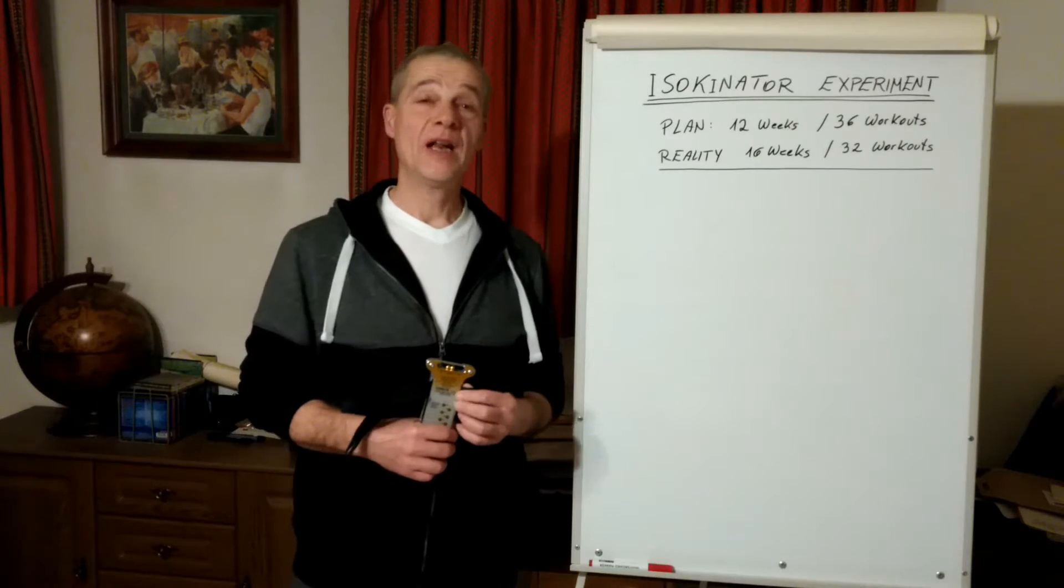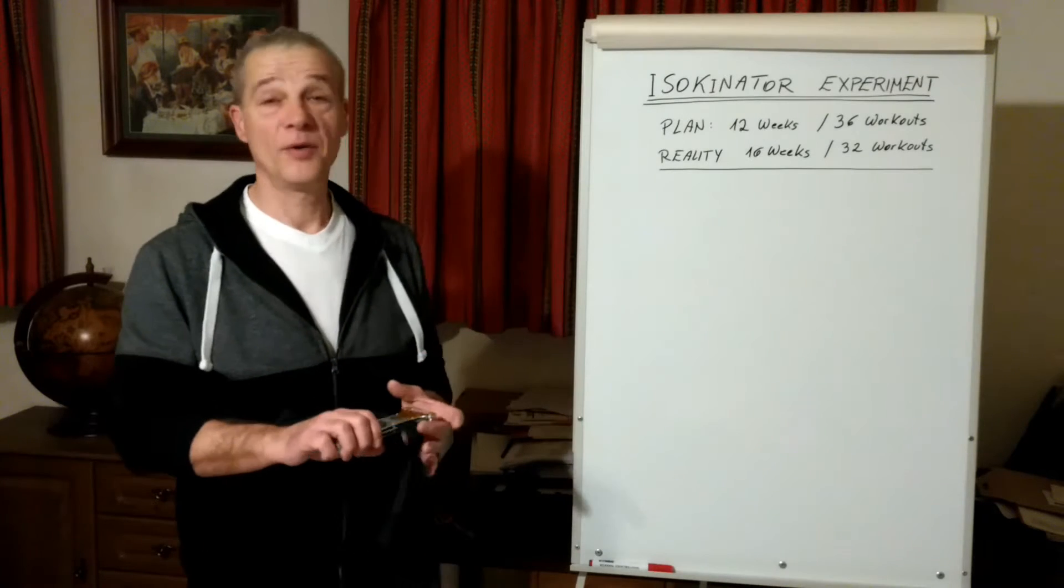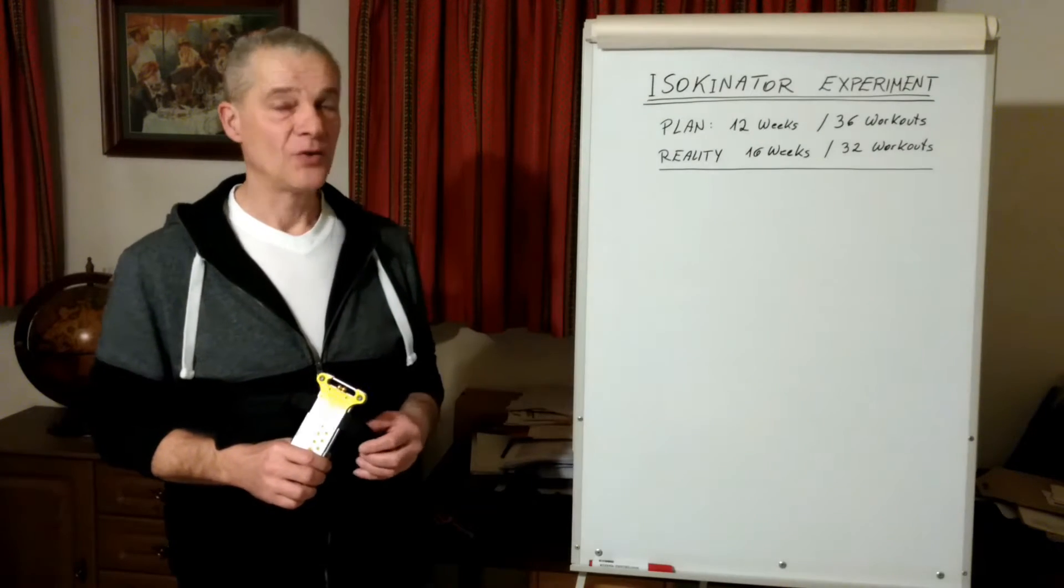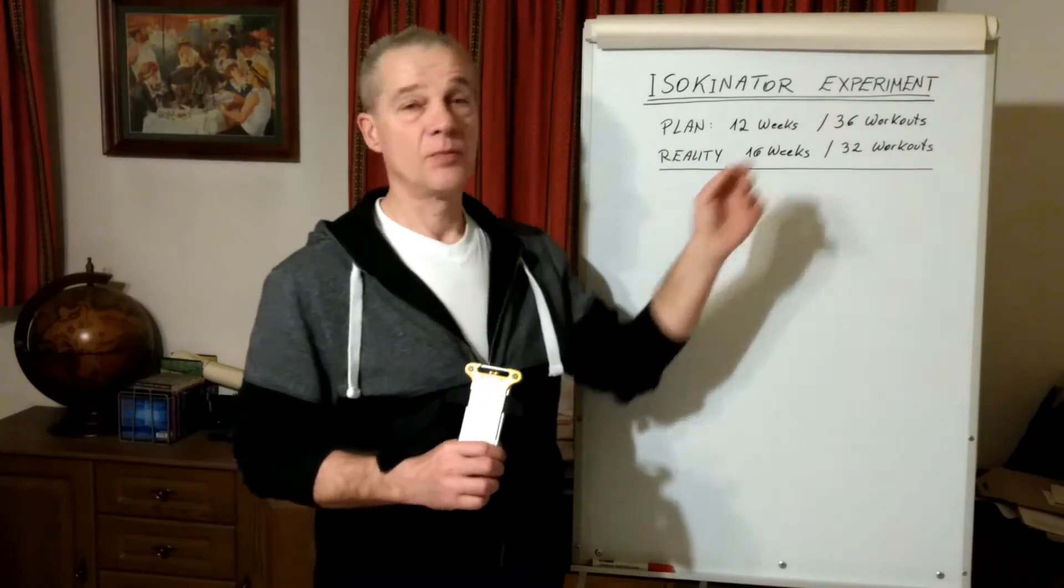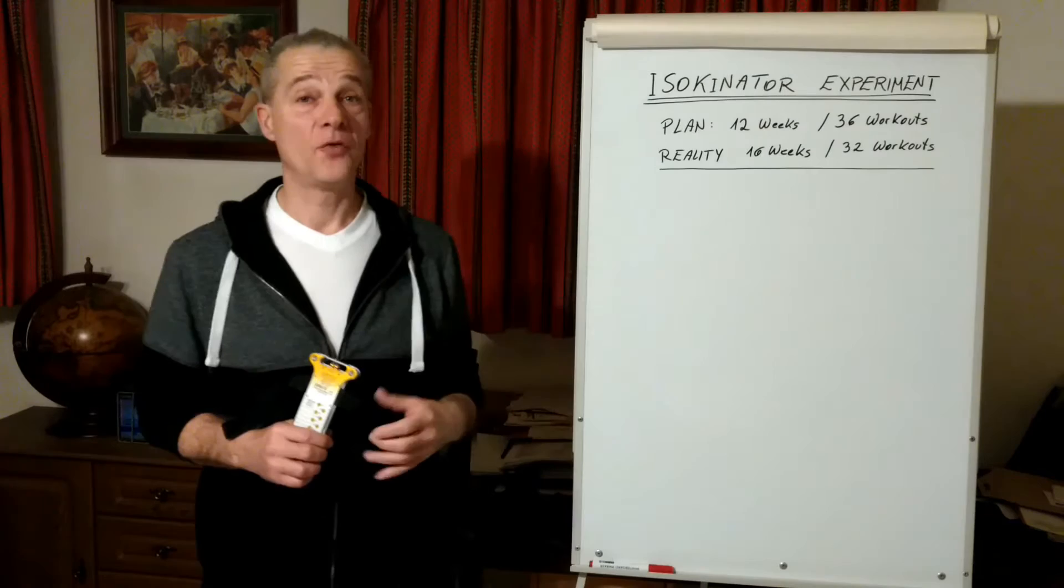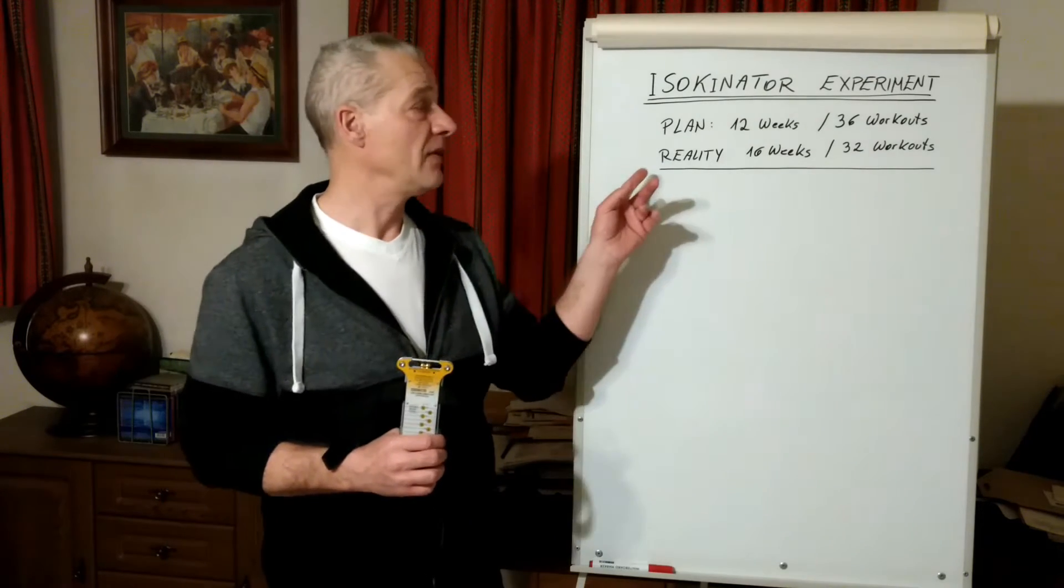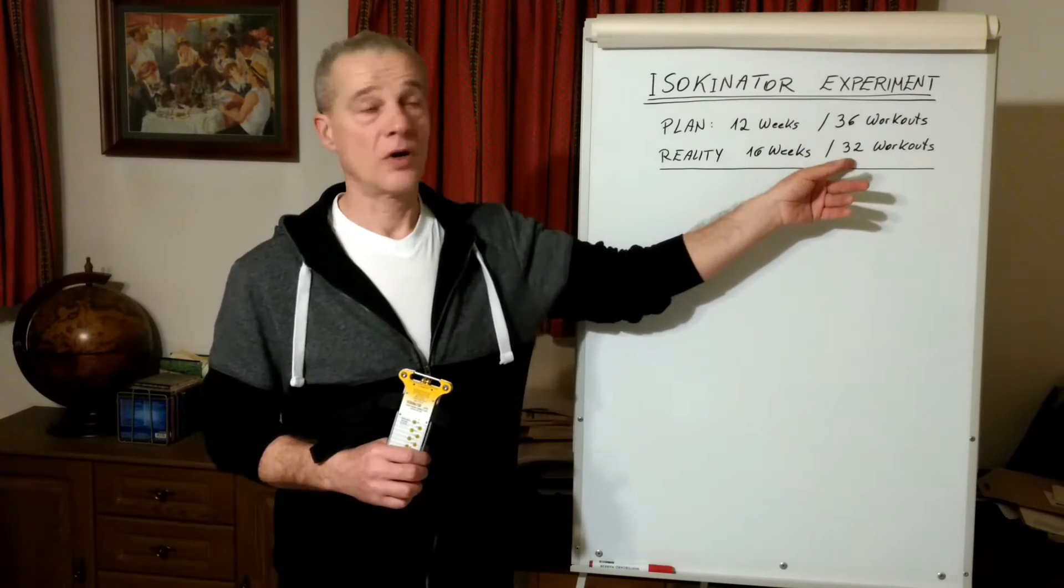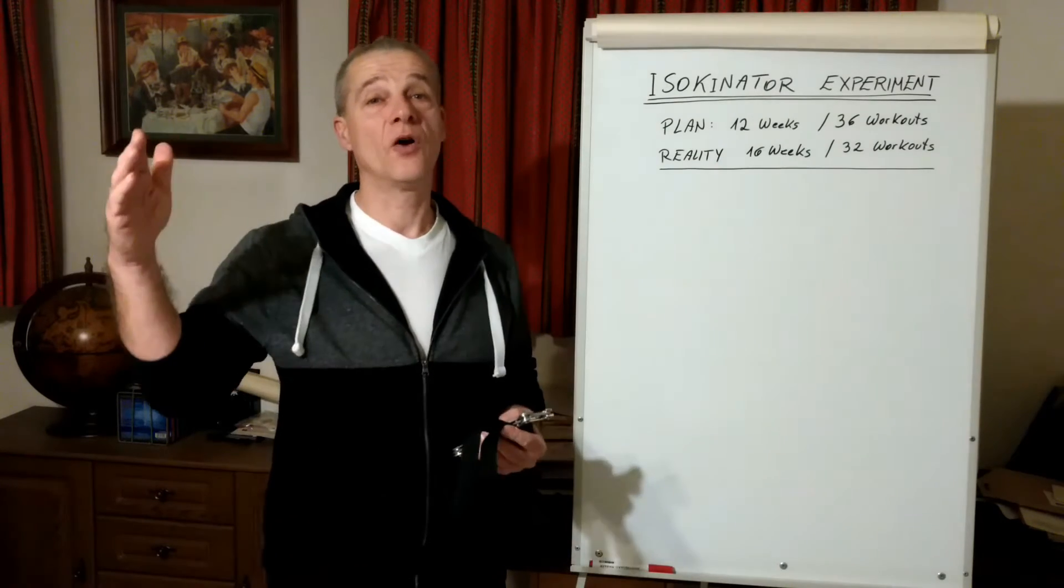Hi, my name is Christian and I just finished my 12-week experiment with the Isokinator. I planned to do 12 weeks with 36 workouts, three workouts per week, but I wasn't able to do this. In reality, I only was able to do 32 workouts during 16 weeks. This means I needed four weeks longer and made four training sessions less.